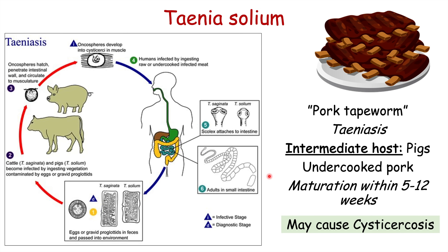Importantly, Taenia solium may cause cysticercosis or neurocysticercosis. Cysticercosis occurs when a human ingests the proglottids or eggs themselves. This can happen through auto-infection — if they are infected with Taenia solium, release proglottids and eggs, and due to improper sanitation ingest those eggs. They then act like the intermediate host, where oncospheres hatch and penetrate the intestinal wall, circulating into certain areas of the body such as the liver, the eyes, or the brain.